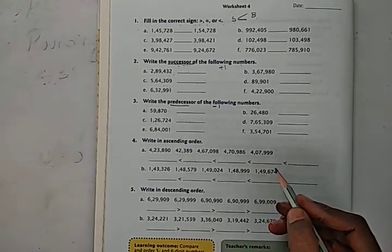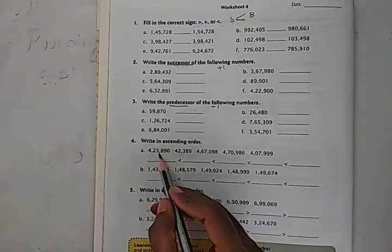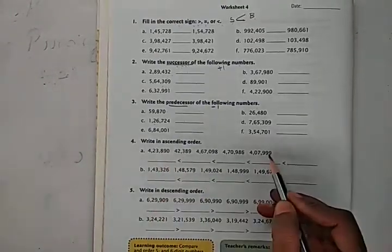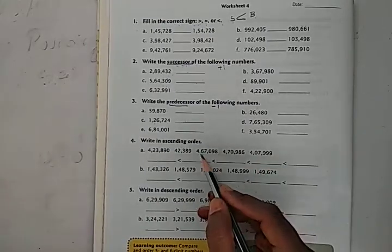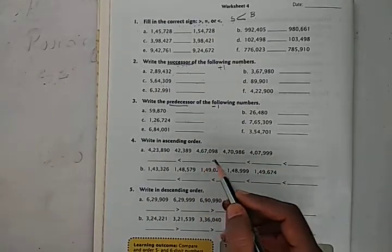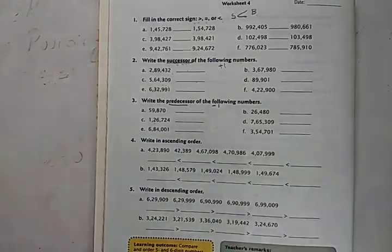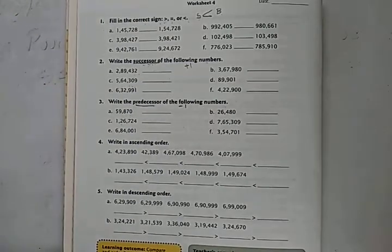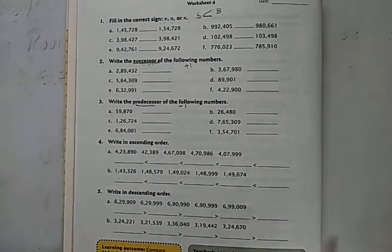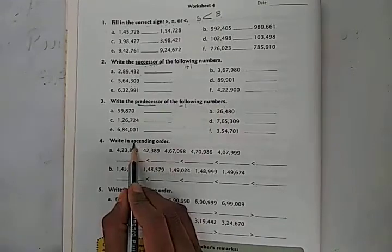Fourth Roman: write in ascending order. We have five numbers. Observe these numbers carefully. First of all, count the digits of the given numbers. If possible, arrange the numbers by counting their digits — from the smallest number to the biggest number. You all know how to write ascending order.